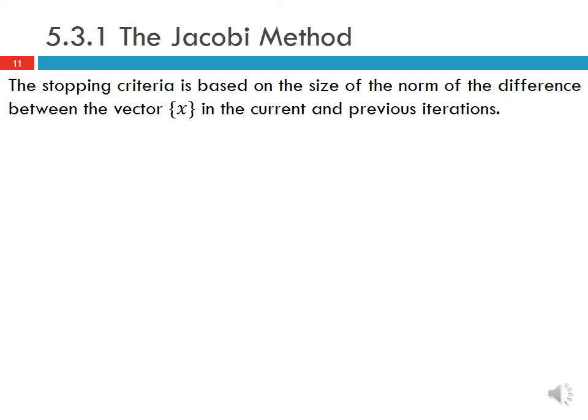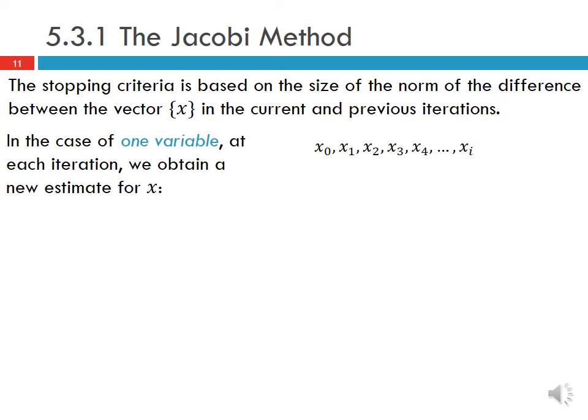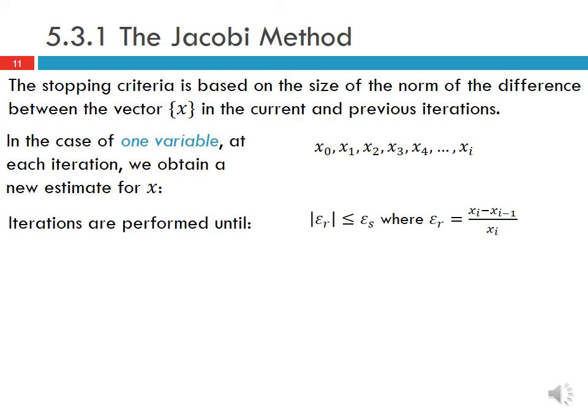The stopping criteria is based on the size of the norm of the difference between the vector x in the current and previous iterations. In the case of one variable, at each iteration we obtain a new estimate for x: x₀, x₁, x₂, x₃, and so on up to xᵢ. The iterations are performed until the absolute value of εᵣ is less than or equal to εₛ, where εᵣ is the current estimate xᵢ minus the previous estimate xᵢ₋₁ divided by the current estimate xᵢ, and εₛ is a specified error threshold.